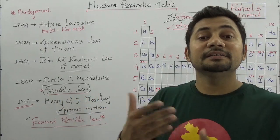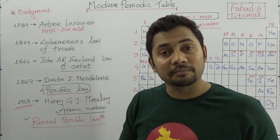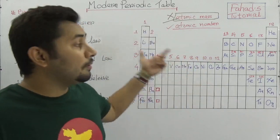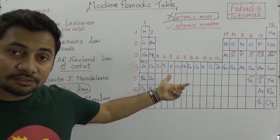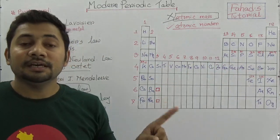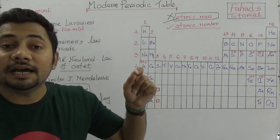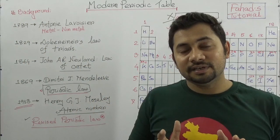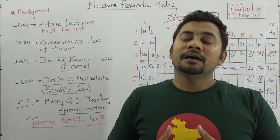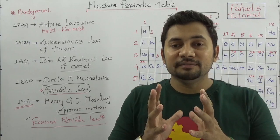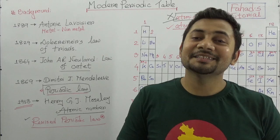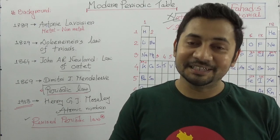Mendeleev introduced the modern periodic table and the periodic law. Then, after the invention of the atomic number, the periodic law needed to be revised. The periodic law was revised because the arrangement by atomic mass was not right — as we saw with argon/potassium and tellurium/iodine. The revised periodic law came with the atomic number instead. In the next video, I shall cover the characteristics of the periodic table. The third video will be about the nature of elements and how we can identify the positions of an element in the periodic table from its electron configuration. Stay well, stay blessed. Bye.